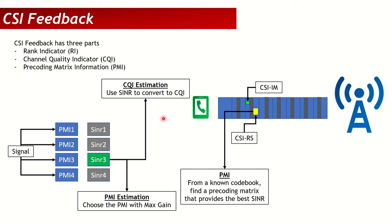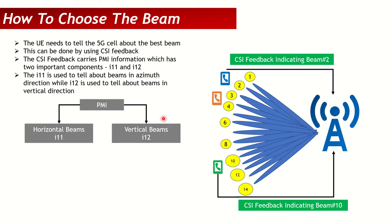Based on this feedback, the gNodeB determines which beam to allocate to the UE. To illustrate: if we have a blue UE, an orange UE, and a green UE among several available beams, the blue UE tells the gNodeB in its CSI feedback to allocate beam number 2, the orange UE selects beam number 4, and the green UE selects beam number 10. The gNodeB then schedules each UE's data on its respective beam.